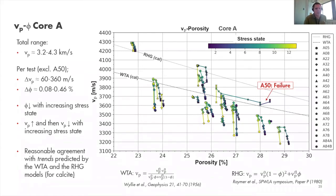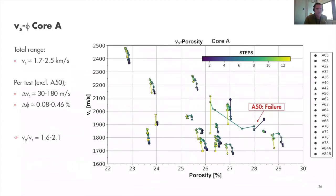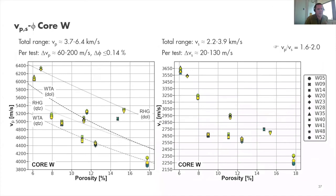For S-waves from Core A, we find a total range of 1.7 to 2.5 km/s. Per test (excluding the outlier), the vertical spread is up to 180 meters per second, and the horizontal spread is the same as for P-wave. We find a reasonable range of P-wave to S-wave velocity ratios, giving some confidence about the quality of the picking.